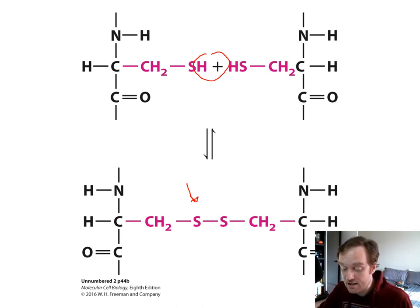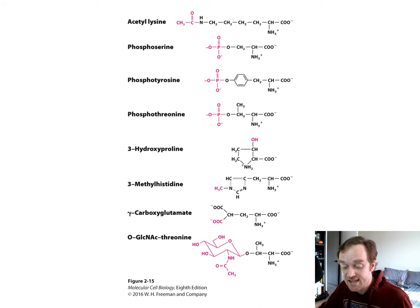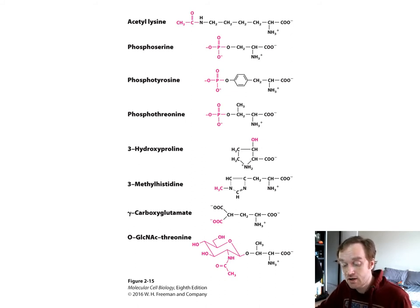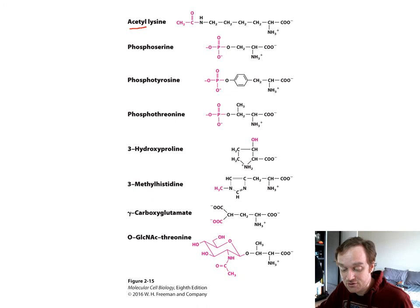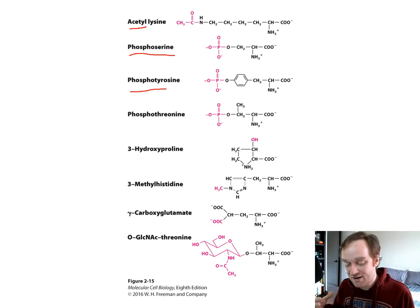Disulfide bonds are very common in proteins. They cross-link proteins either intramolecularly or intermolecularly. Adding further complexity, amino acids can be modified either before or after synthesis into a polypeptide chain. For example, you can add acetyl groups, add a phosphate group to make phosphoserine from serine, or phosphotyrosine from tyrosine. We have 20 basic amino acids, but they can all be modified, creating a whole range of different chemical compounds.